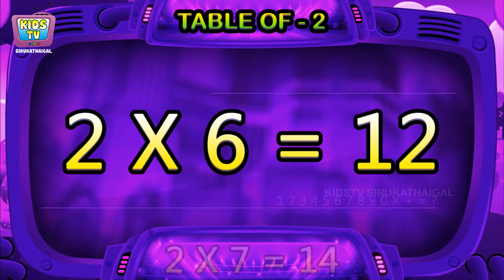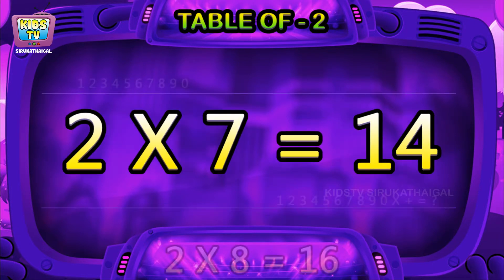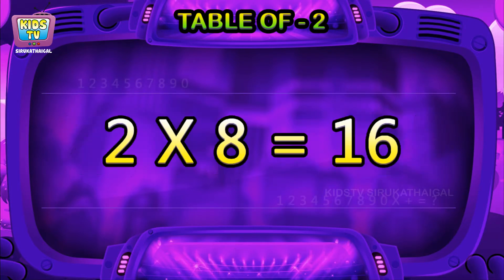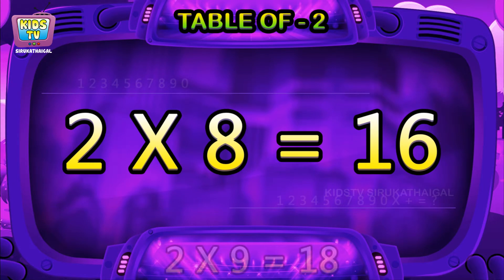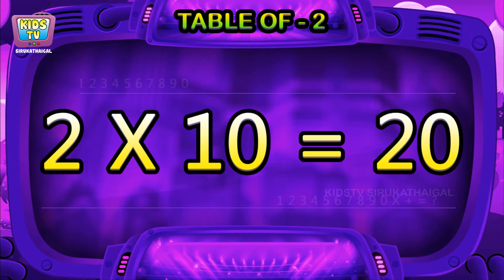Two sixes are twelve, two sevens are fourteen, two eights are sixteen, two nines are eighteen, two tens are twenty.